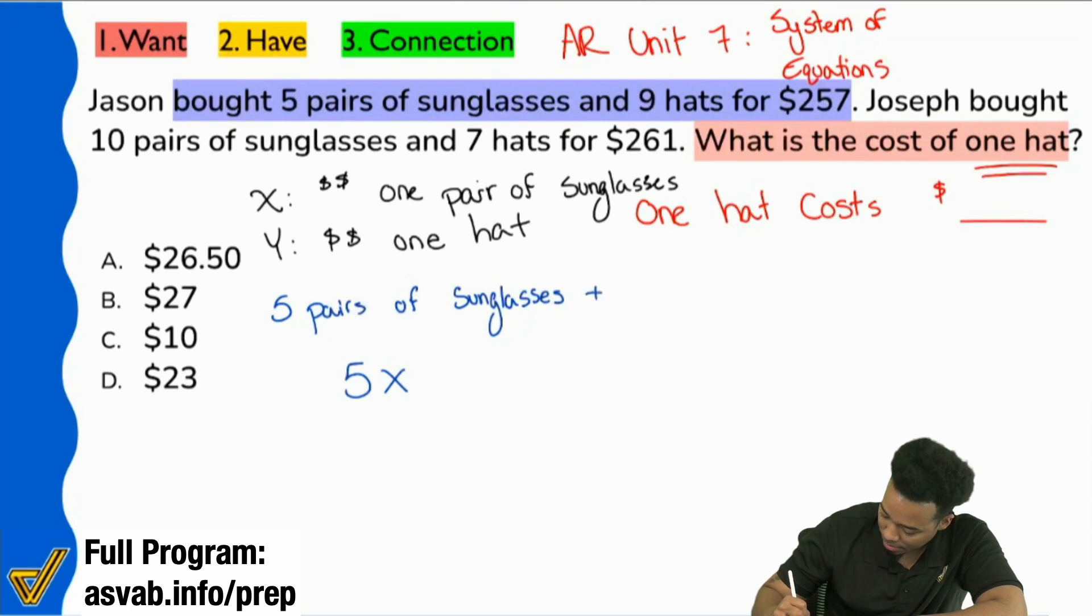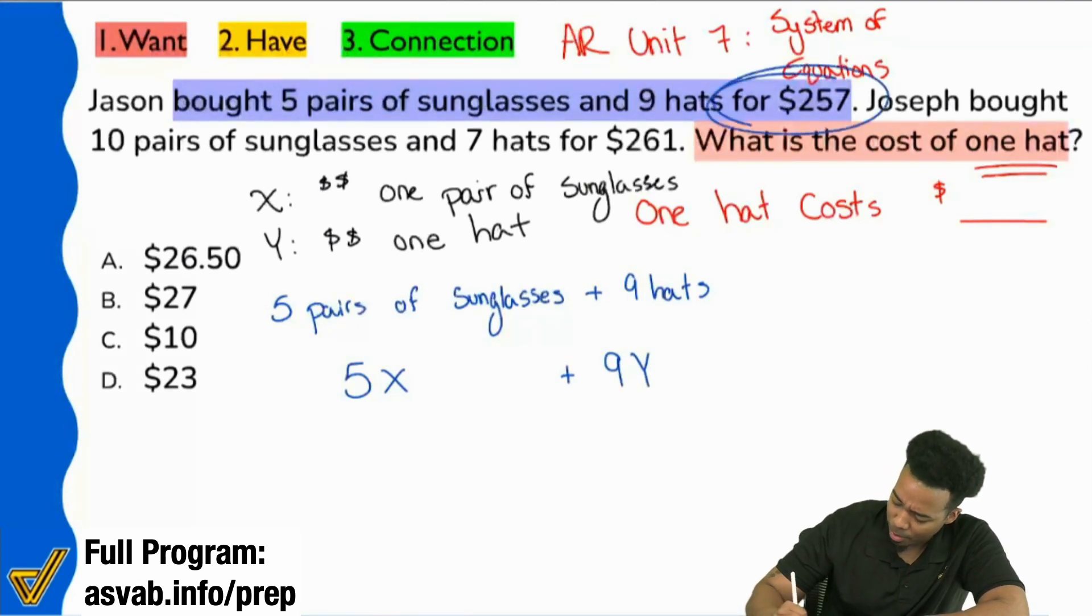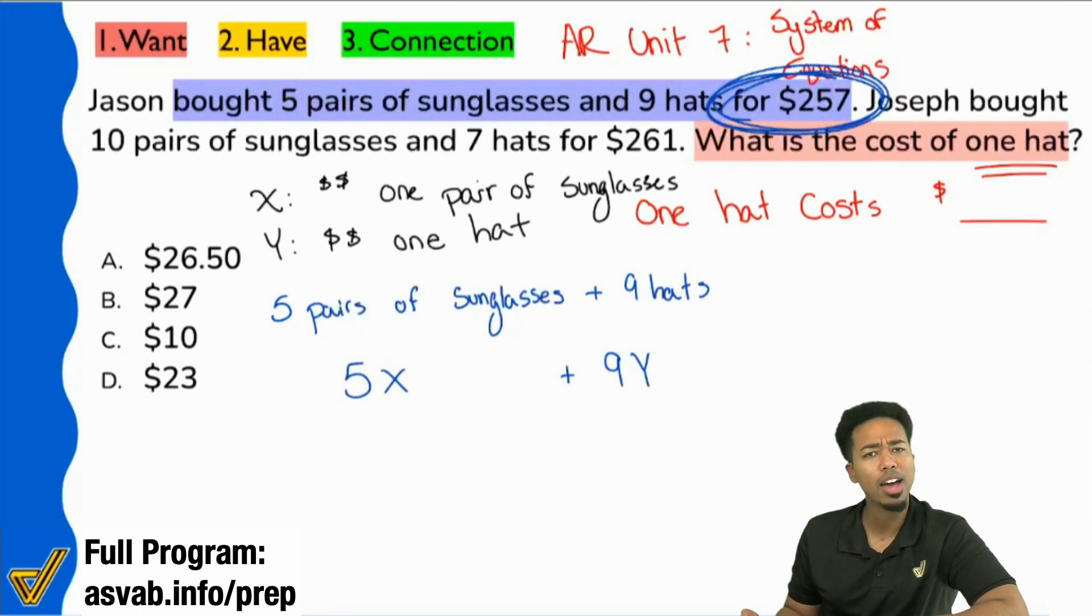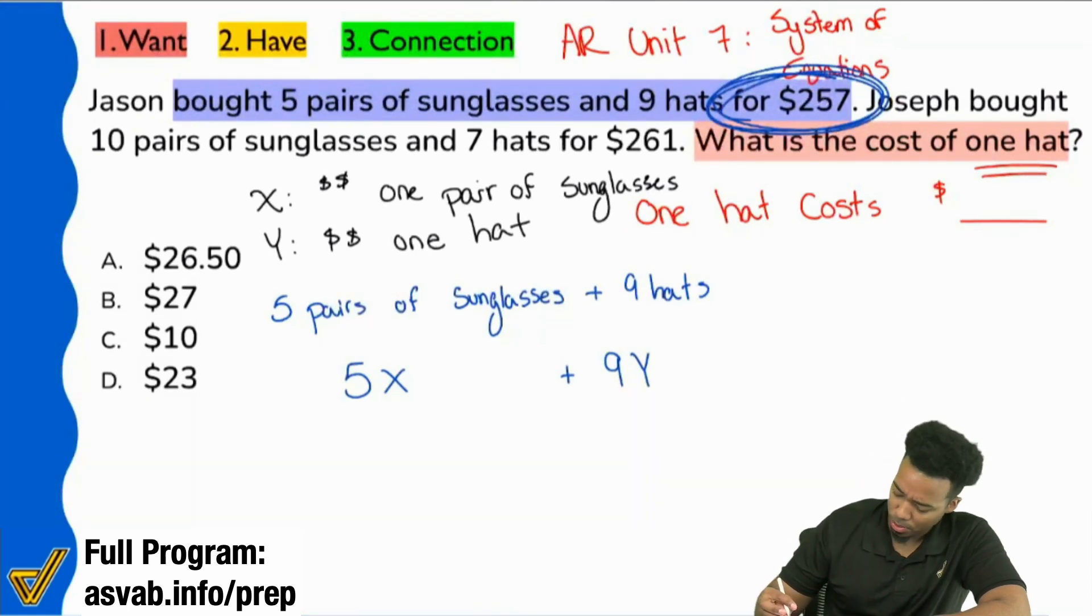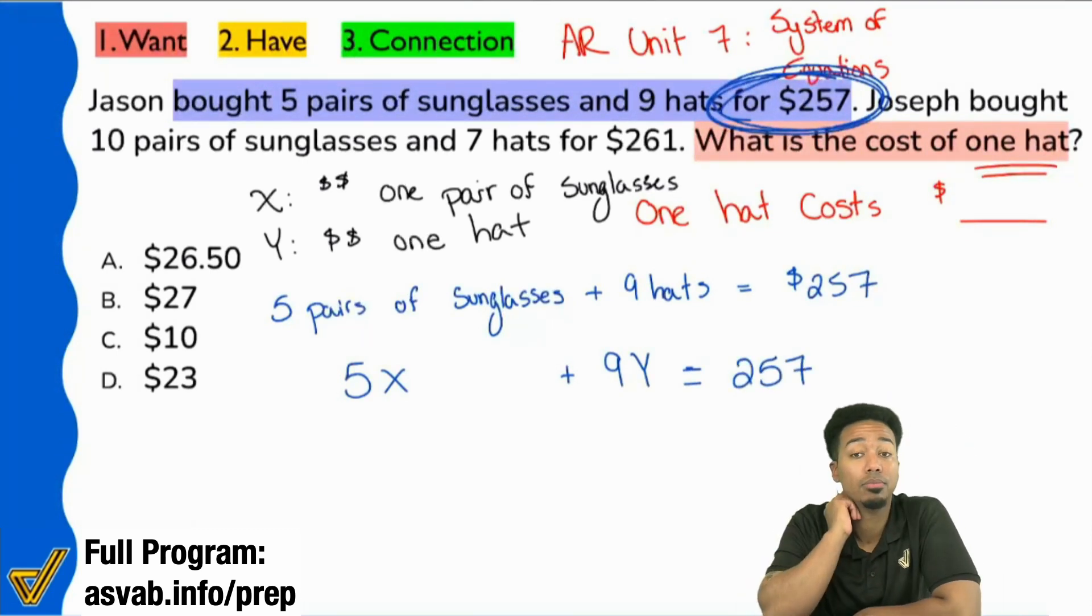When we say nine hats, well, that's going to be 9Y, because that would be nine hats. And then what did it say, everybody? How much did we buy all that for? How much did we buy all of that for? Right, 257. So five pairs of sunglasses plus nine hats, that's going to be 257. So that would be 5X plus 9Y equals 257. Does that make sense in English? 5X plus 9Y equals 257. Five pairs of sunglasses plus nine hats, that's $257. Does that make sense?